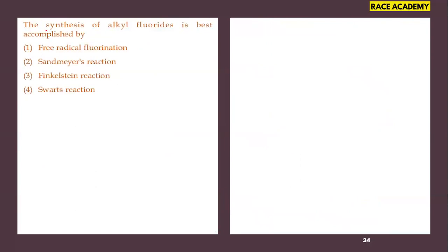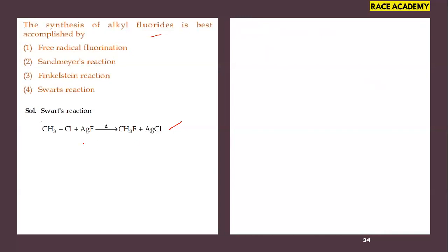The synthesis of alkyl fluorides is best accomplished by: free radical fluorination, Sandmeyer's reaction, Finkelstein reaction, or Swarts reaction? Alkyl fluorides are exclusively prepared by the Swarts reaction, where silver or mercury fluoride salts undergo double displacement with alkyl halides. The fourth option — Swarts reaction — is correct.